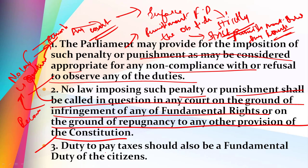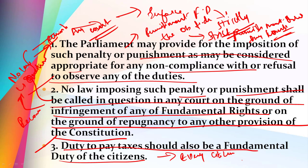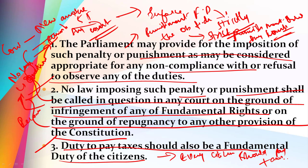The third rejected recommendation was that the duty to pay taxes should also be a fundamental duty of citizens — they recommended that every citizen should pay taxes. So these are the three recommendations rejected by the Congress government, and they added five new fundamental duties in Article 51A by the 42nd amendment.